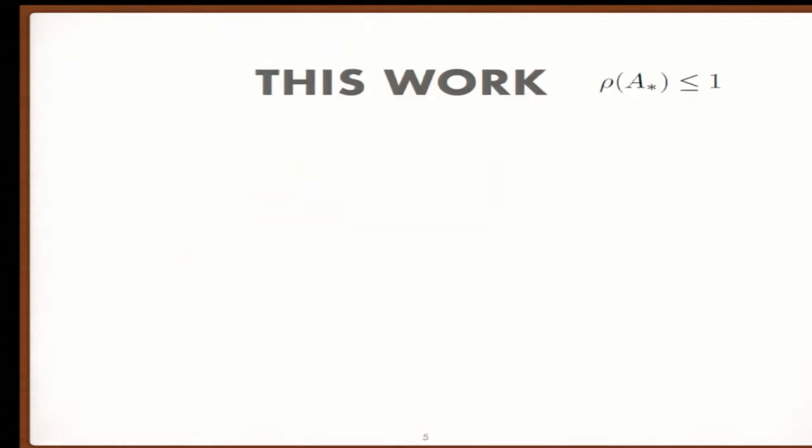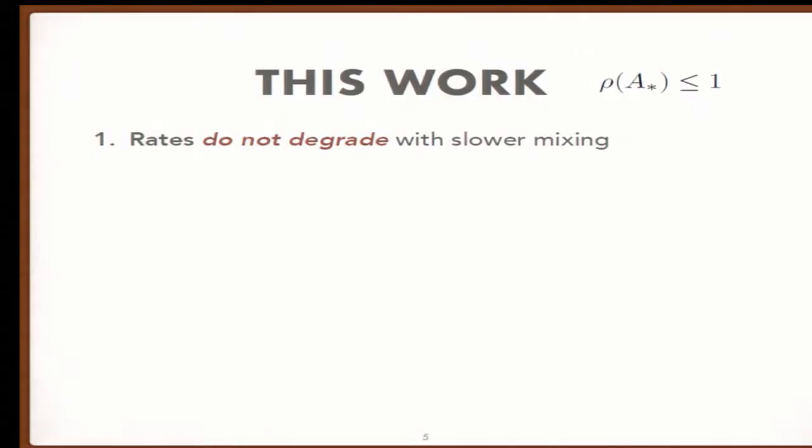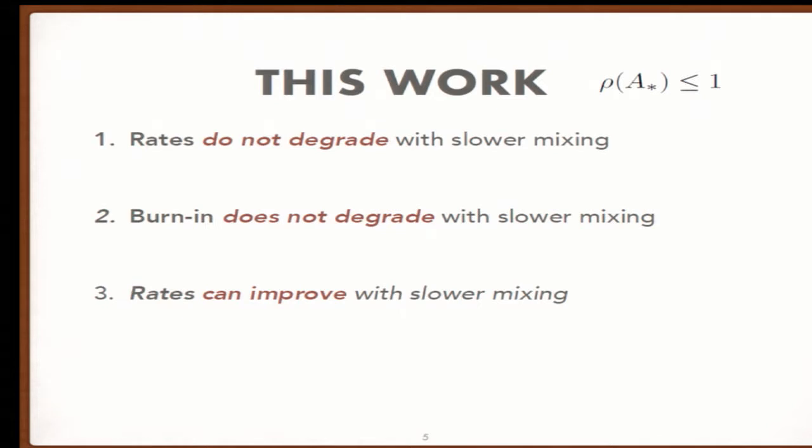In our work, we consider marginally stable linear systems when the spectral radius of A star is less than or equal to one. We show three things: First, the least squares estimator rates don't degrade heavily with slower mixing. Second, burn-in times don't degrade significantly. Lastly, sometimes systems that mix more slowly actually have considerably faster rates.